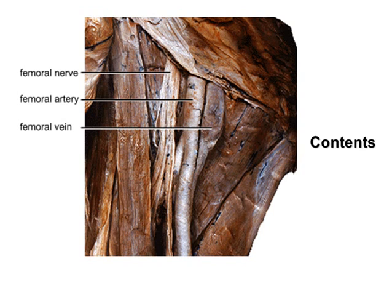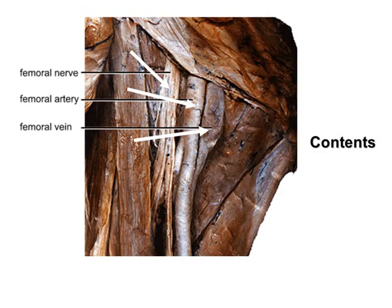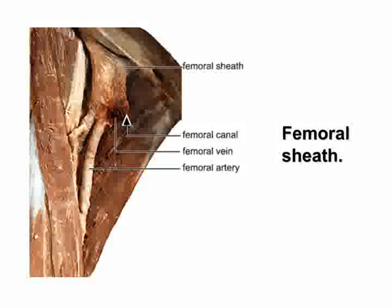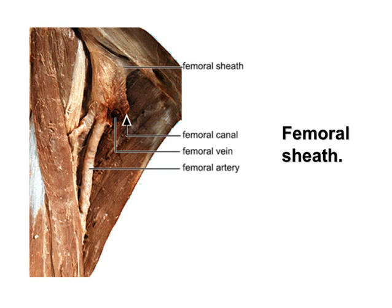The chief contents of the femoral triangle include the femoral nerve, the femoral artery in the center, and the femoral vein medially. The femoral vein and artery, but not the nerve, are surrounded for a short distance by the femoral sheath.